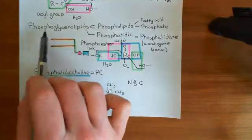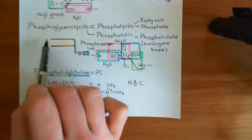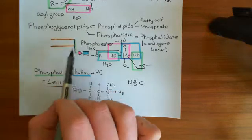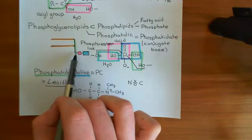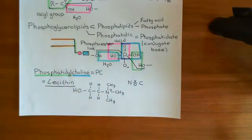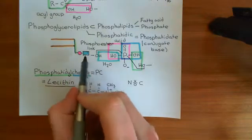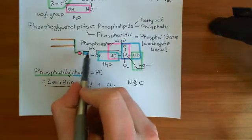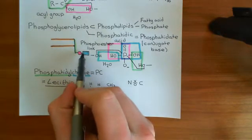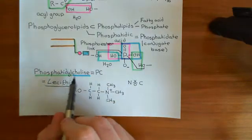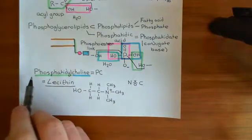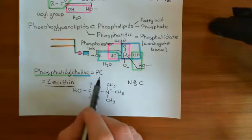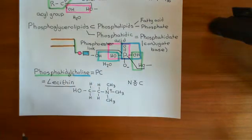They have a glycerol backbone, hence the glycero in their name. They have two long-chain carboxylic acids, and they then have a phosphate group attached to the third carbon's alcohol group of the glycerol molecule, and also attached to the phosphate group you then have some group which can vary. The main example of a phosphoglycerolipid we're going to be concerned with is phosphatidylcholine, PC, also called lecithin.